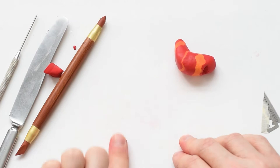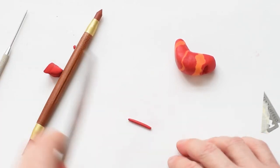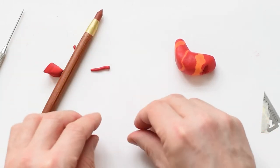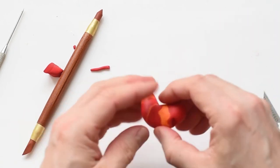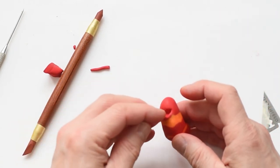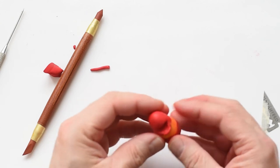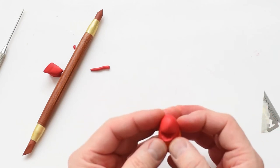When you're happy with the mouth, you still need to make a lip. I roll a little bit of red and then just make a small lip and attach it to the mouth. Use your fingers or use a tool.